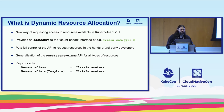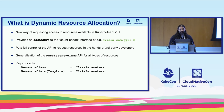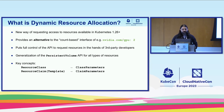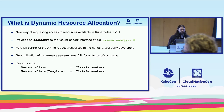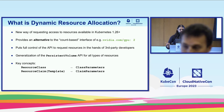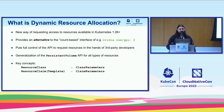One can think of Dynamic Resource Allocation as a generalization of the persistent volume API for all types of resources, not just volumes. The key concepts to keep in mind are: the resource class and its associated class parameters, which help you define the API for resource classes, as well as resource claims, resource claim templates, and their associated claim parameters.